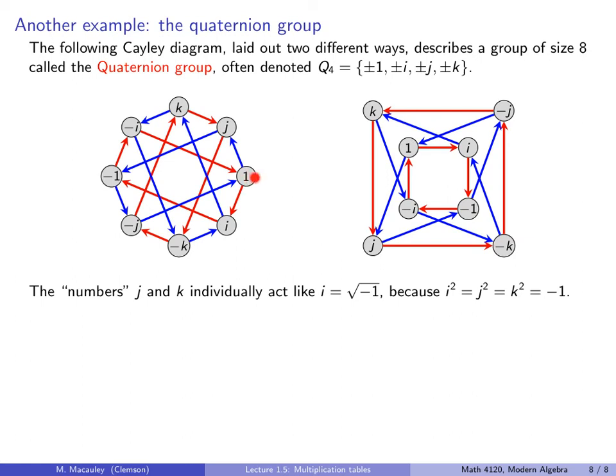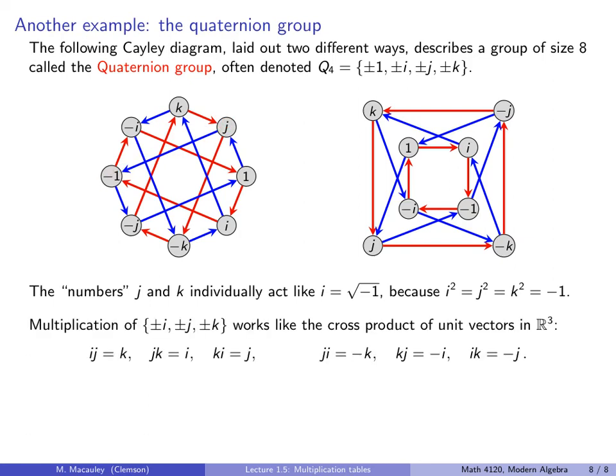You can also think of j and k as imaginary numbers as well, because these things square to be negative one. In other words, if you start at the identity, which we will call by 1 here, and you do i squared, you get negative one. If you do j squared, that's the blue arrow twice, you get negative one. And k is up there. How do you get to k? k is just i times j. If you do that again, so red, blue times red, blue, you get to be negative one as well. Multiplication of 1 and negative 1 in this group works exactly how you think it does. Multiplication of the other six elements, i, j, k, and their negatives works like the cross product of unit vectors in R3.